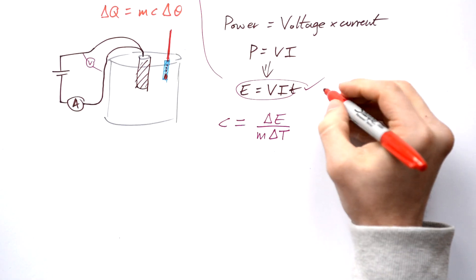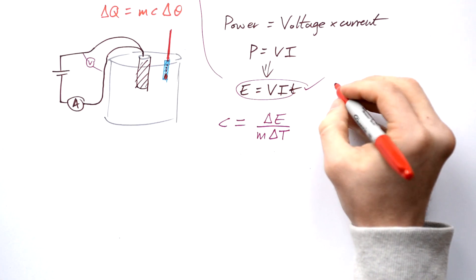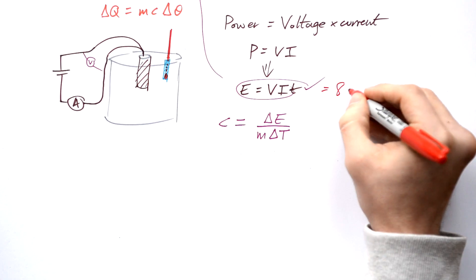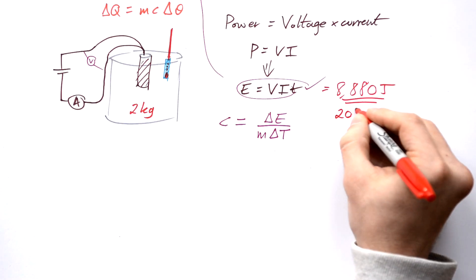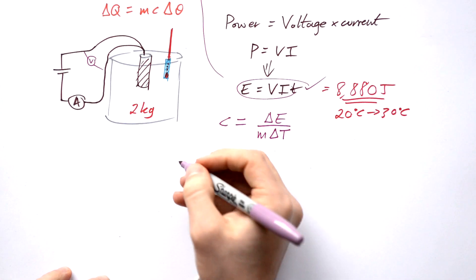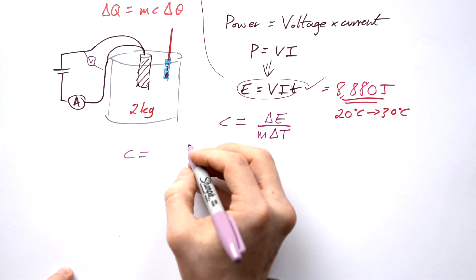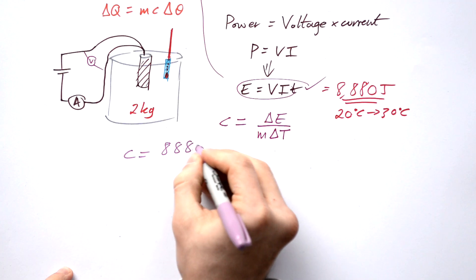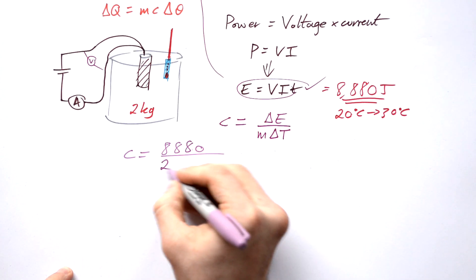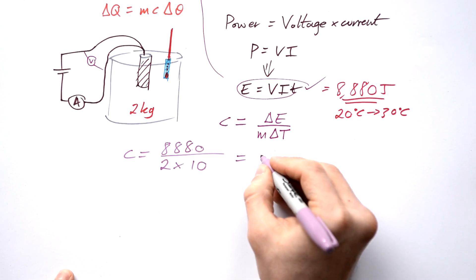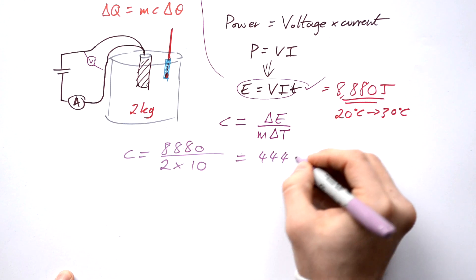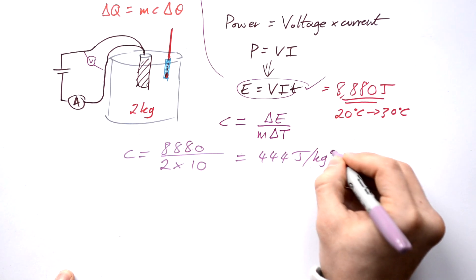For example, say we find the energy supplied is 8880 joules. The iron block has a mass of 2 kilograms and the temperature changed from 20 to 30 degrees Celsius — a change of 10 degrees. Putting this into our formula: SHC = 8880 / (2 × 10) = 444 joules per kilogram per degree Celsius.